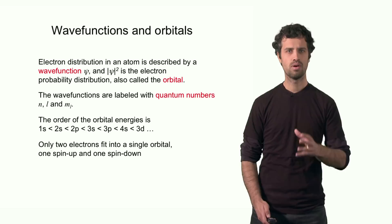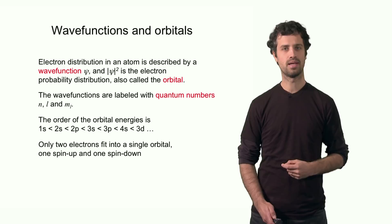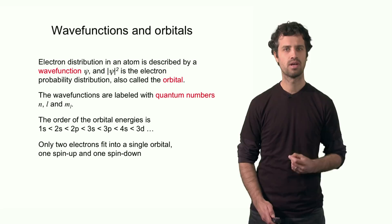Only two electrons can occupy a single orbital. If they do so, one of them must have spin up — electron spin quantum number ms = +½ — and the other must have ms = −½, or spin down.